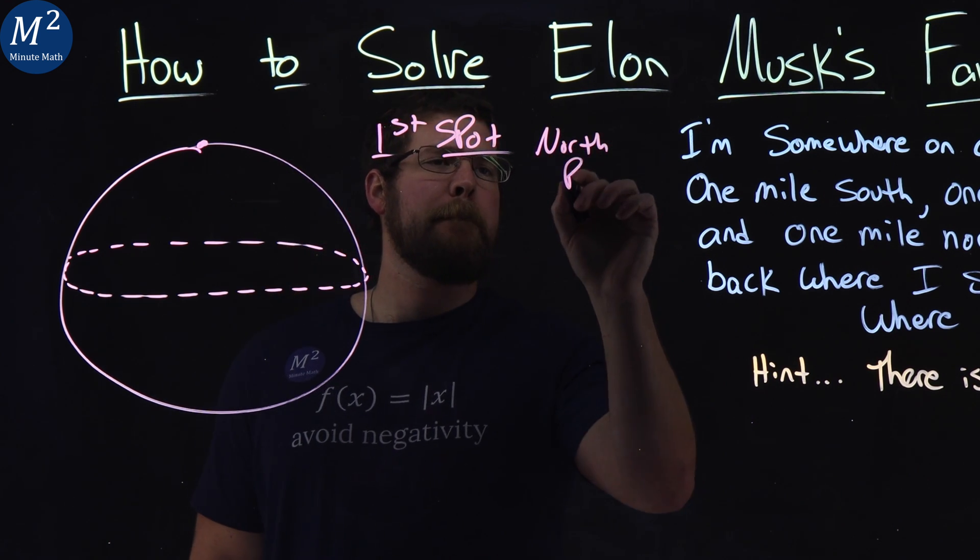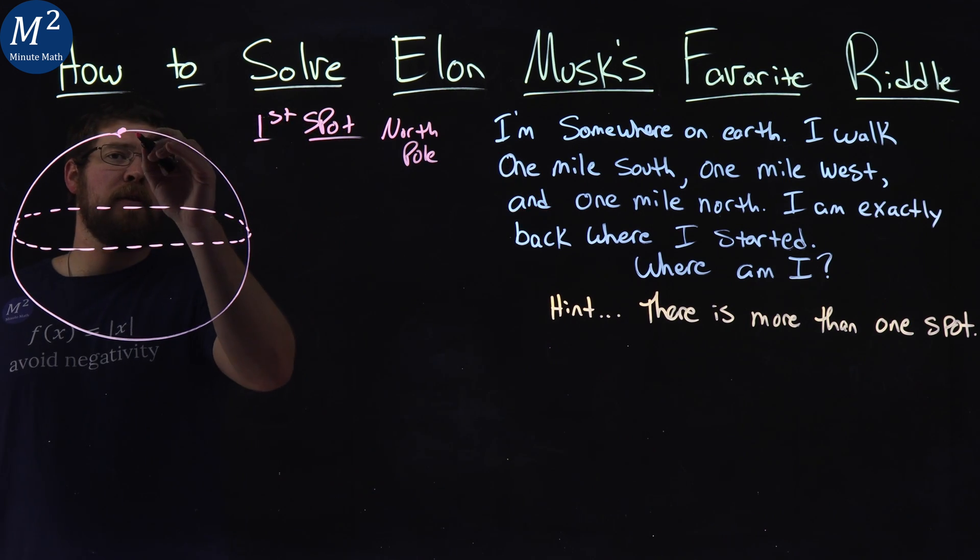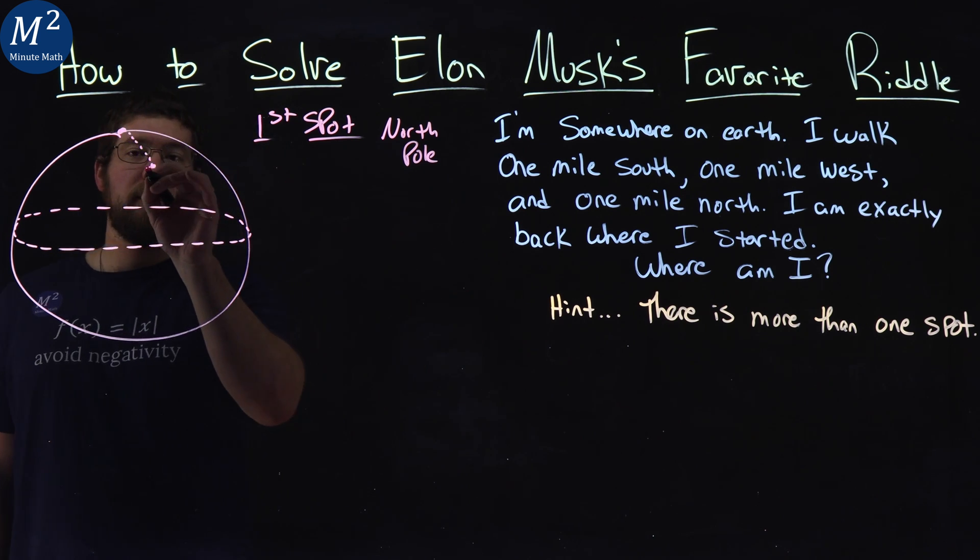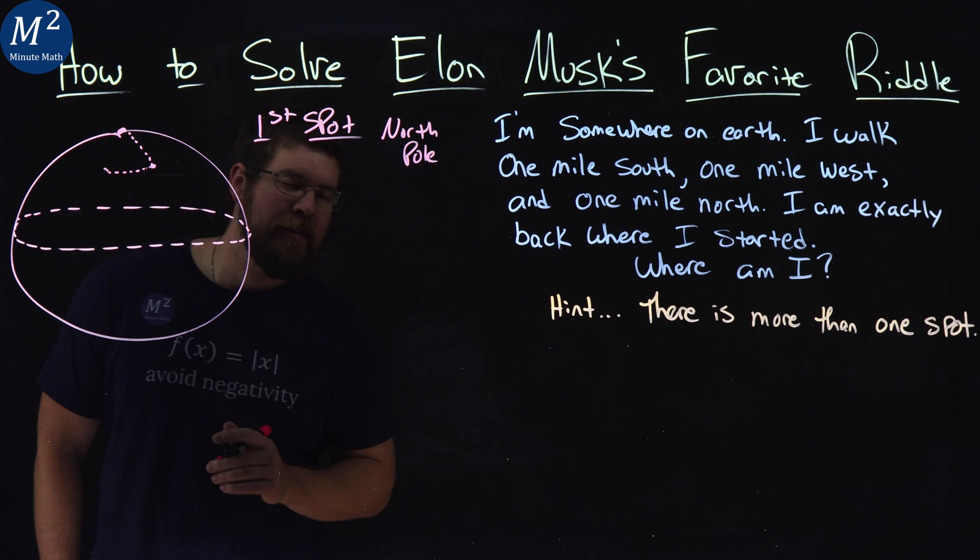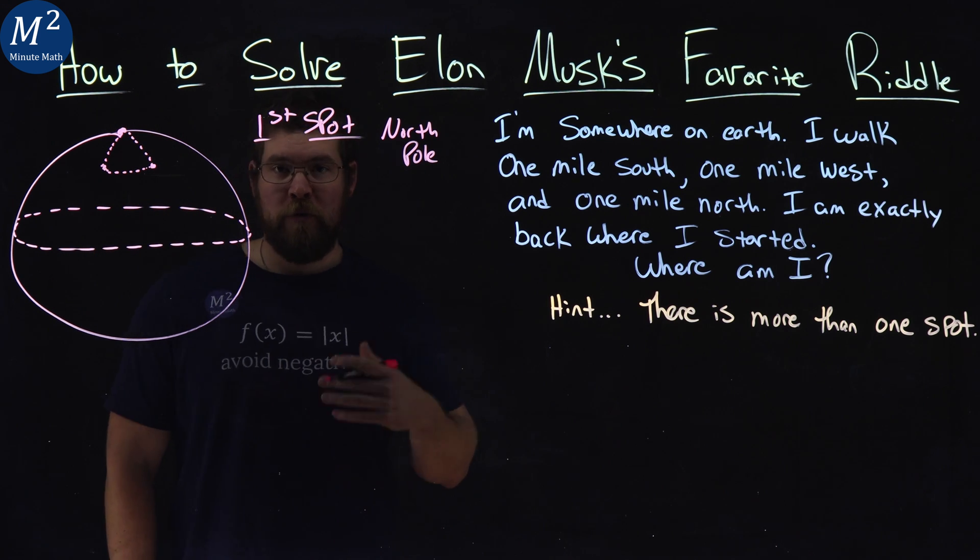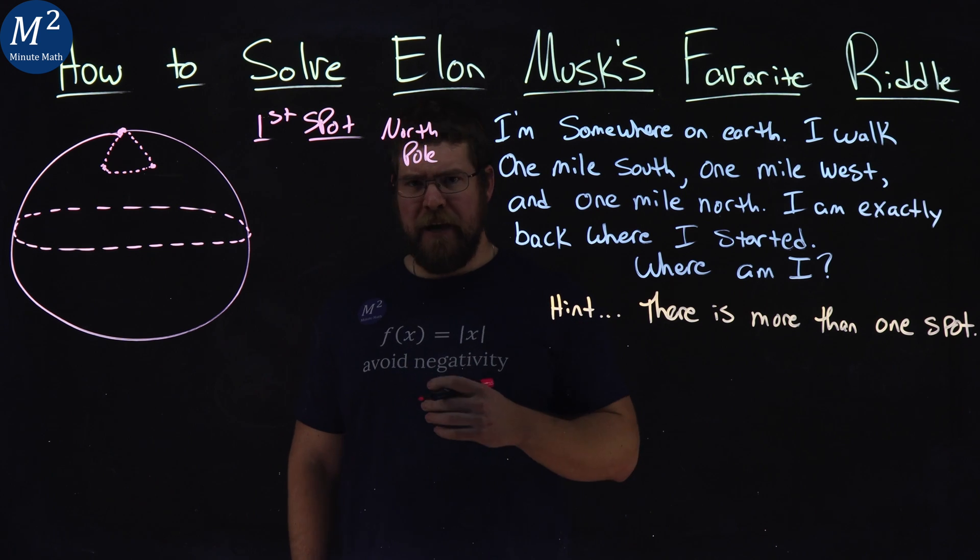Why? Well, let's look at it. If we travel one mile south, we're going down south on the curve, down south one mile. Then we travel one mile west. Obviously it's not drawn to scale. And we go one mile back north, we end up right back at the North Pole. So this is the first one that everyone really gets, and it's a pretty easy one to understand.